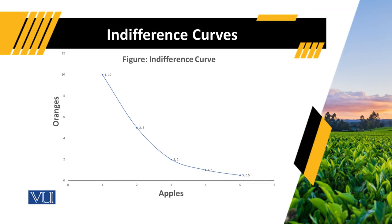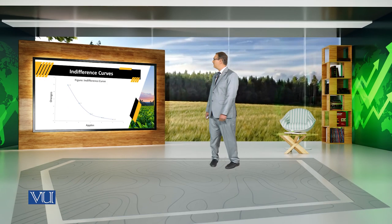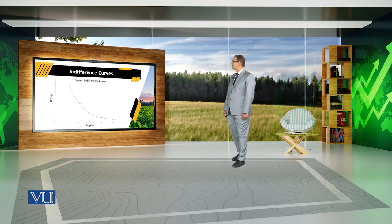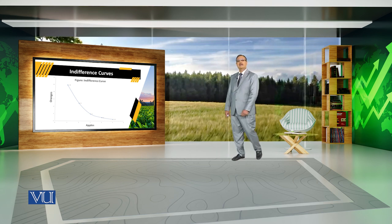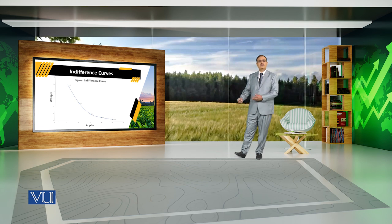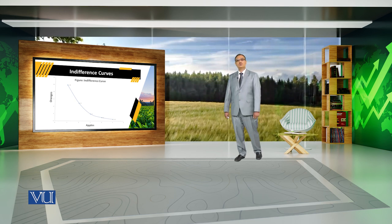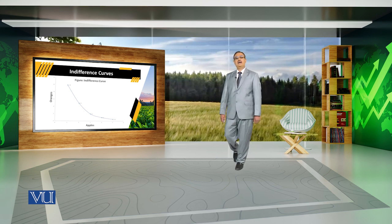In this diagram, we show different combinations of apples and oranges that provide the same level of satisfaction to a particular consumer. By using one apple and a number of oranges, the consumer is getting a certain level of satisfaction. That same level of satisfaction can also be achieved by using two apples and five oranges, or three apples and two oranges. These are different combinations of two commodities that provide the same level of satisfaction, represented graphically as an ISO utility curve or indifference curve.